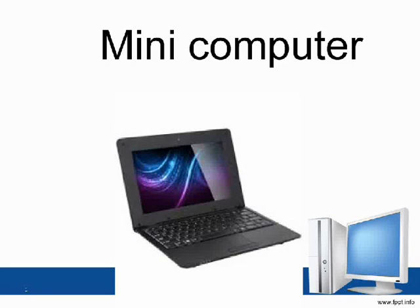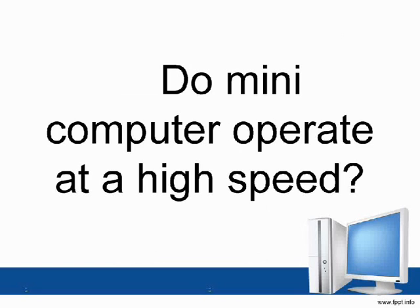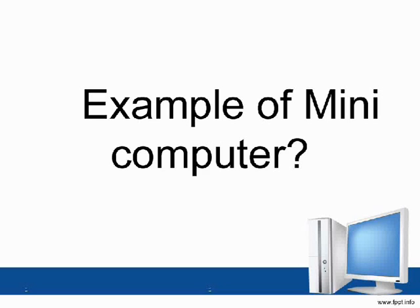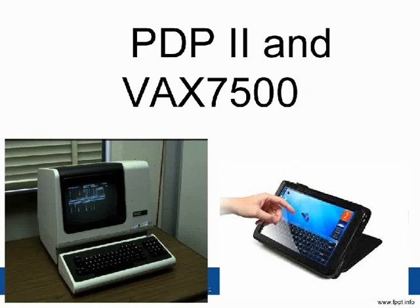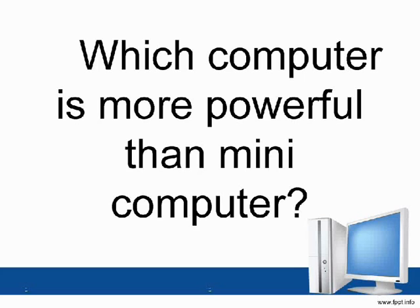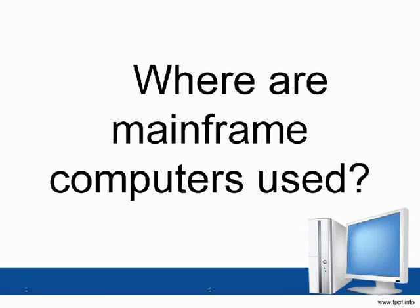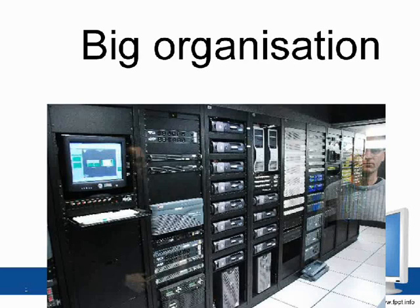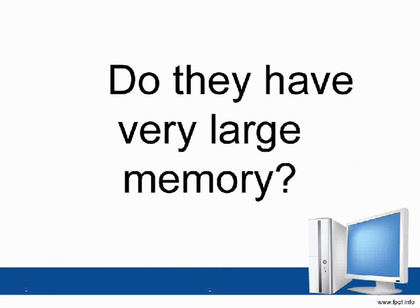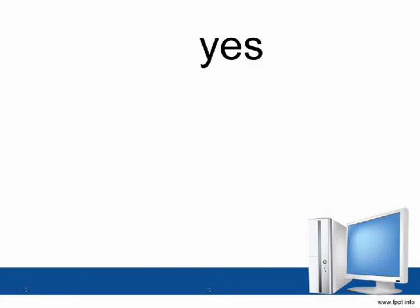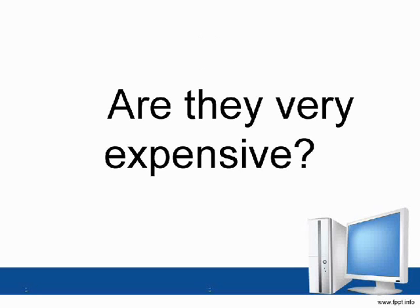Which computer is more powerful than a microcomputer? Minicomputer. Do minicomputers operate at a high speed? Yes. Examples of minicomputers: PDP-2 and VAX 7500. Which computer is more powerful than a minicomputer? Mainframe computer. Where are mainframe computers used? Big organizations. Do they have very large memory? Yes. Are they very expensive? Yes.